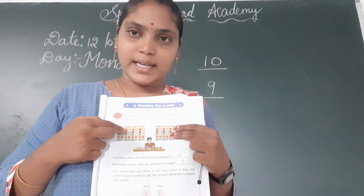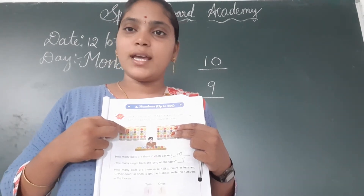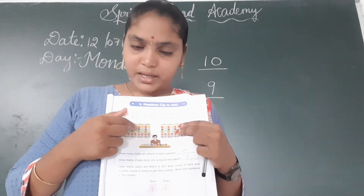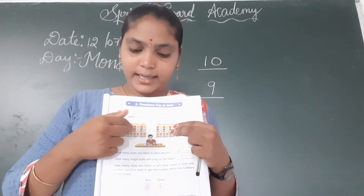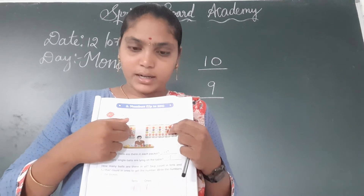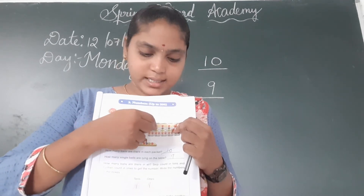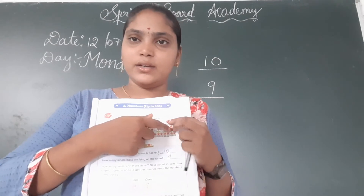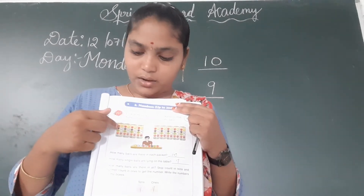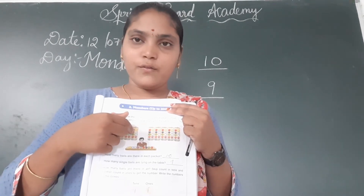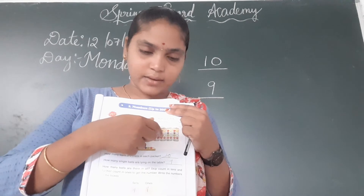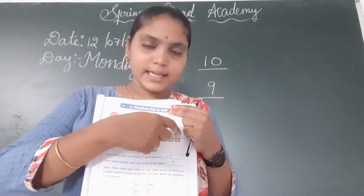10, 20. Why we count like this? Each packet has 10. So: 10, 20, 30, 40, 50, 60, 70, 80, 90. Again: 10, 20, 30, 40, 50, 60, 70, 80, 90.